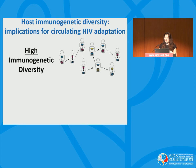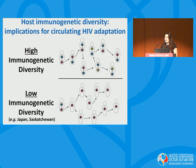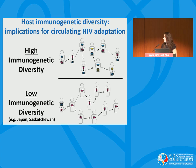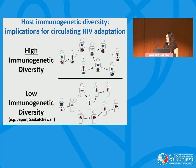However, in HIV epidemics where host immunogenetic diversity is comparatively lower — such as Japan or Saskatchewan — a donor and recipient are much more likely to share HLA class 1 alleles. When an individual selects for an immune escape mutation and transmits their virus onward, there's a good chance those immune escape mutations are already adapted to the recipient's HLA alleles, undermining their ability to control the virus and accelerating disease progression across the population.